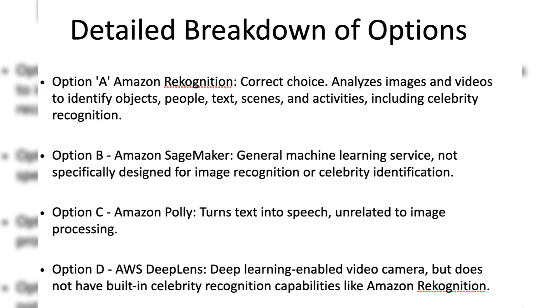Option B, Amazon SageMaker, is a fully managed service that allows you to build, train, and deploy machine learning models at scale. While powerful, it is not specifically designed for image recognition tasks out of the box, especially for celebrity identification.